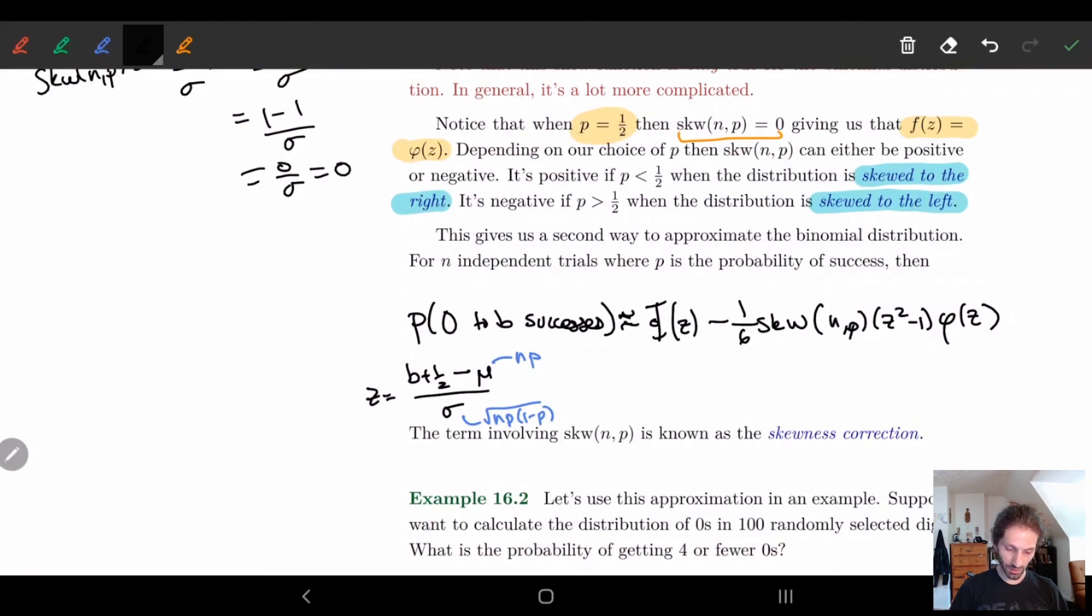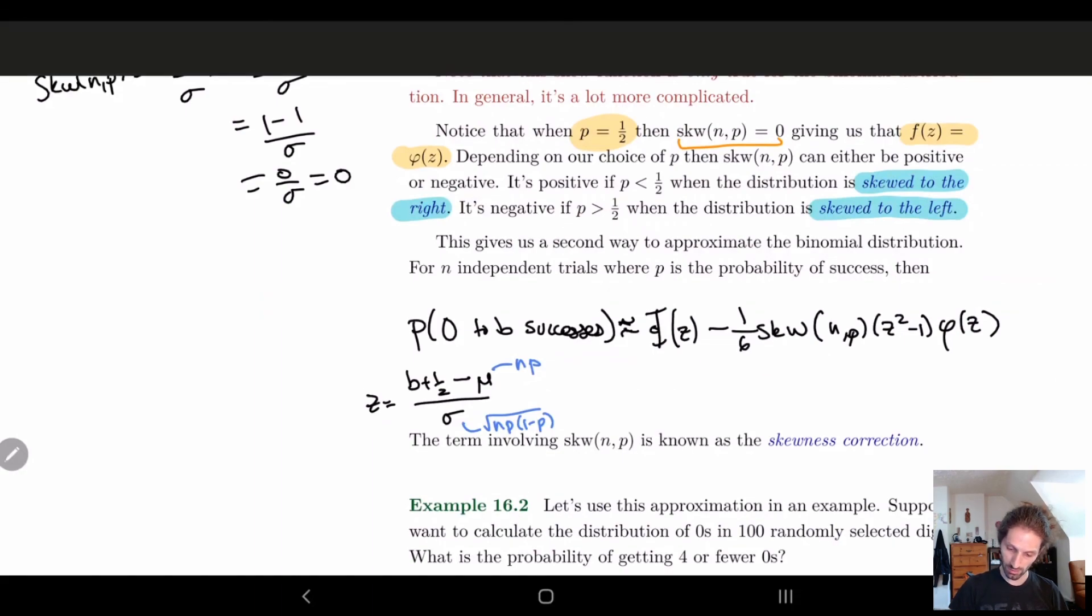So this little term here on the right, this is known as the correction factor, the skewness correction. And we'll stop here for this video and we'll look at an example in the next video. So I will see you then.